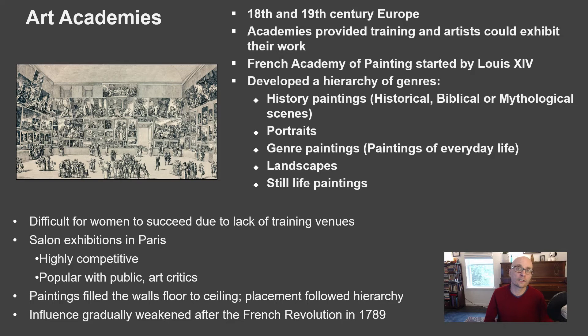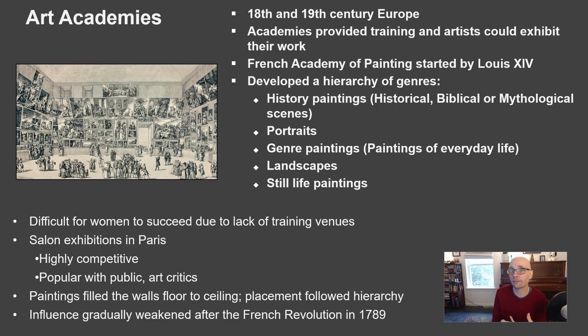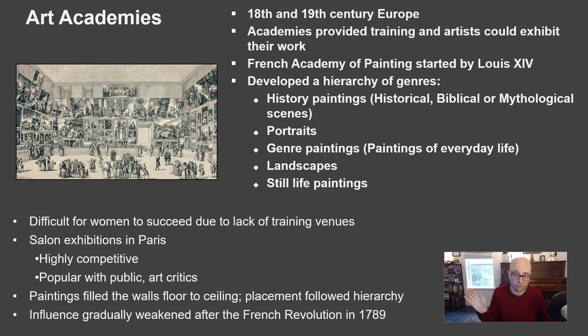Also, if you didn't paint in one of the accepted styles — in this case Romanticism or Neoclassicism — and tried to do something experimental or new, you weren't going to get accepted. There were also rules and limitations against women being allowed; in some countries women weren't allowed at all into academic shows, and in others like France there was a cap on how many could be included. After the French Revolution the influence of the art academy started to dwindle, but it was still a huge presence in European art even into the early 20th century.